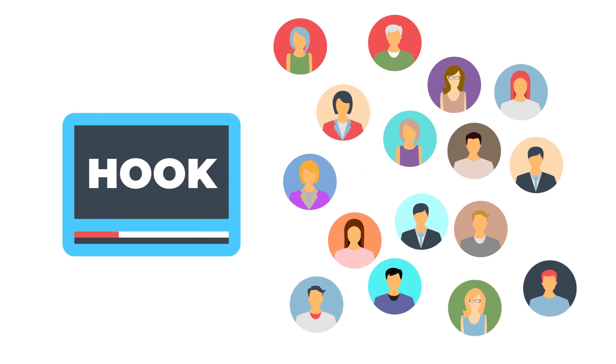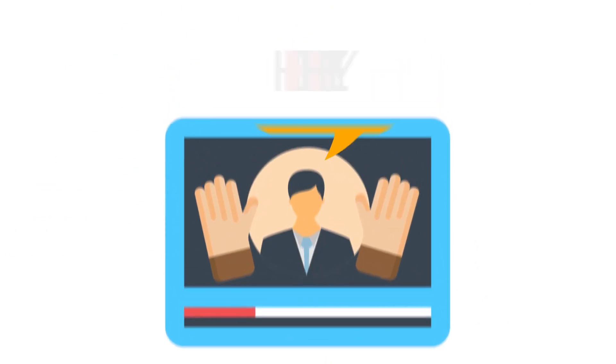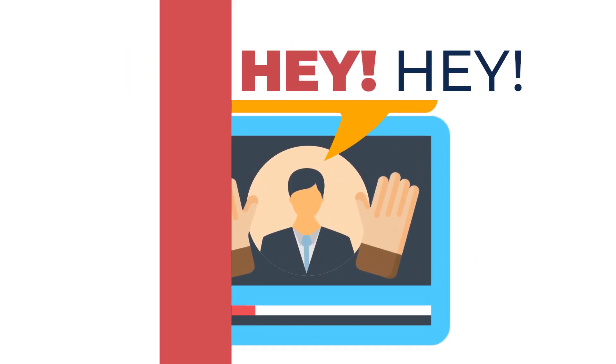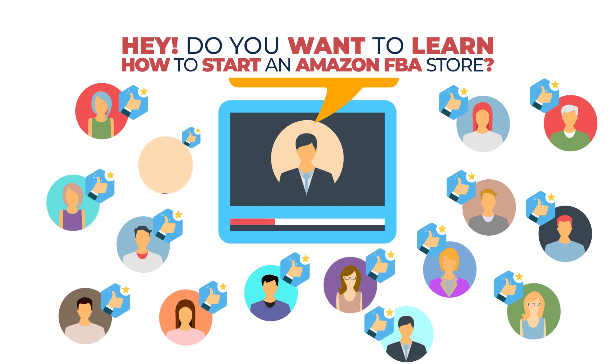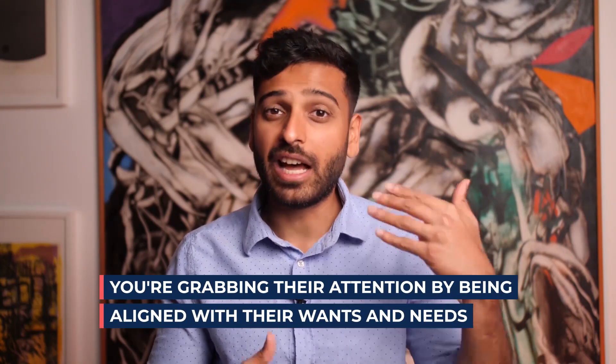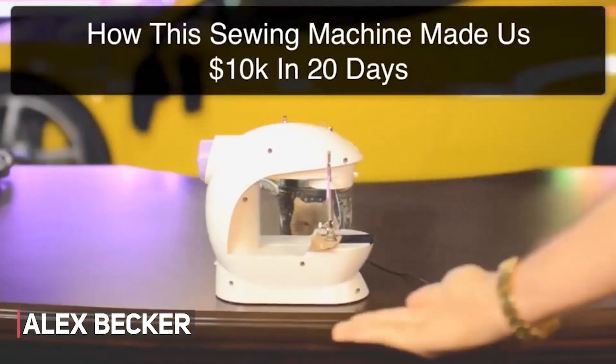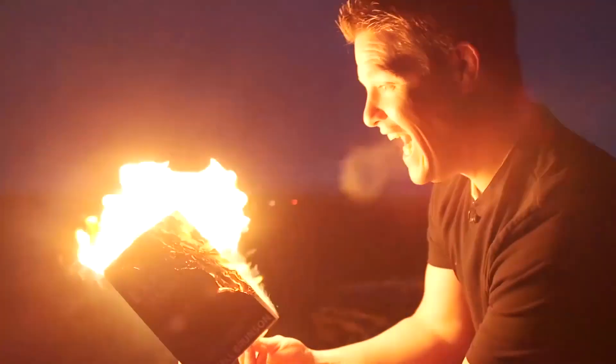A hook could be anything. For one of our clients, he'll actually wave his hands in front of the camera. It could be a statement aimed at your target audience, like: 'Hey, do you want to learn how to start an Amazon FBA store and get to seven figures by the end of this year?' You're grabbing their attention by being aligned with their wants and needs. You really want to grab their attention in the first five seconds. I've seen great hooks like people smashing mugs on the table, people burning books — Russell Brunson was burning his own book in front of the camera.